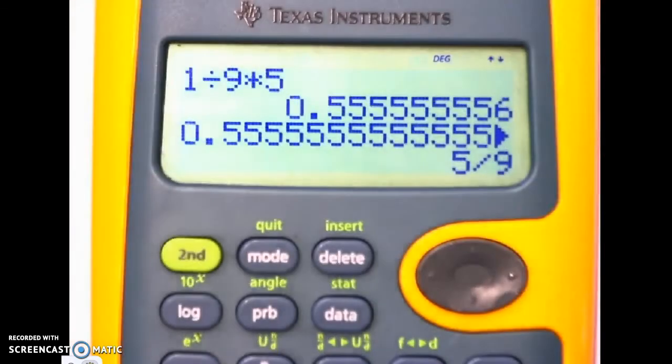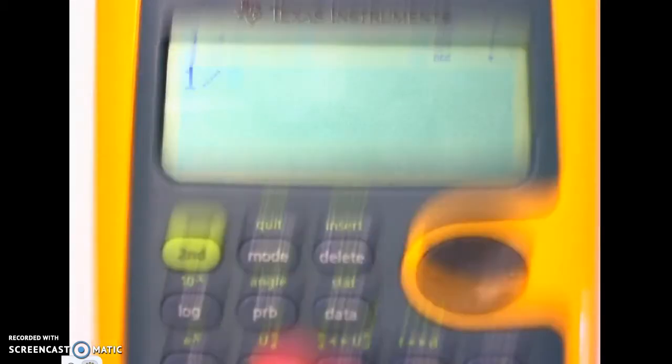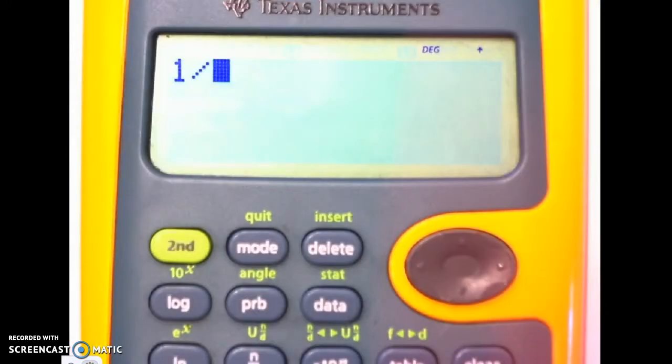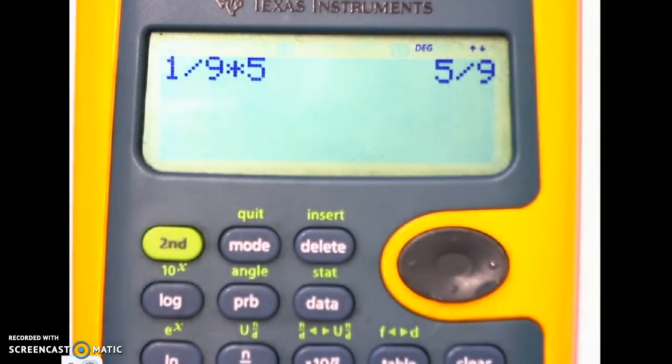The other way you could have done it is like this. You could have used the 1 and then the fraction button right here. Fraction button, 9, times 5 like this. And you can get 5 ninths and you don't need to convert it to a fraction because you've used the fraction button right here.